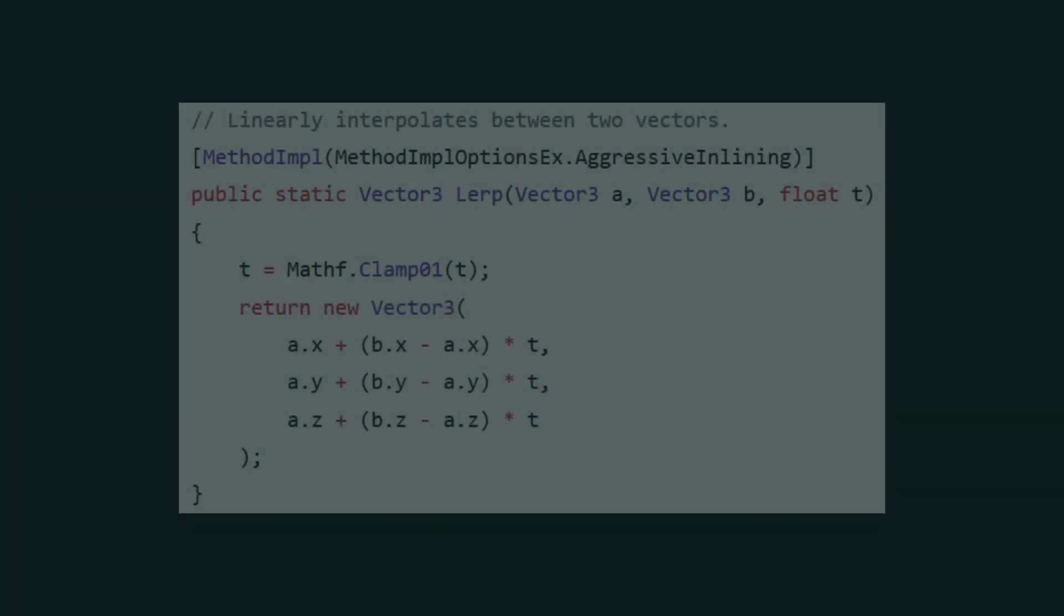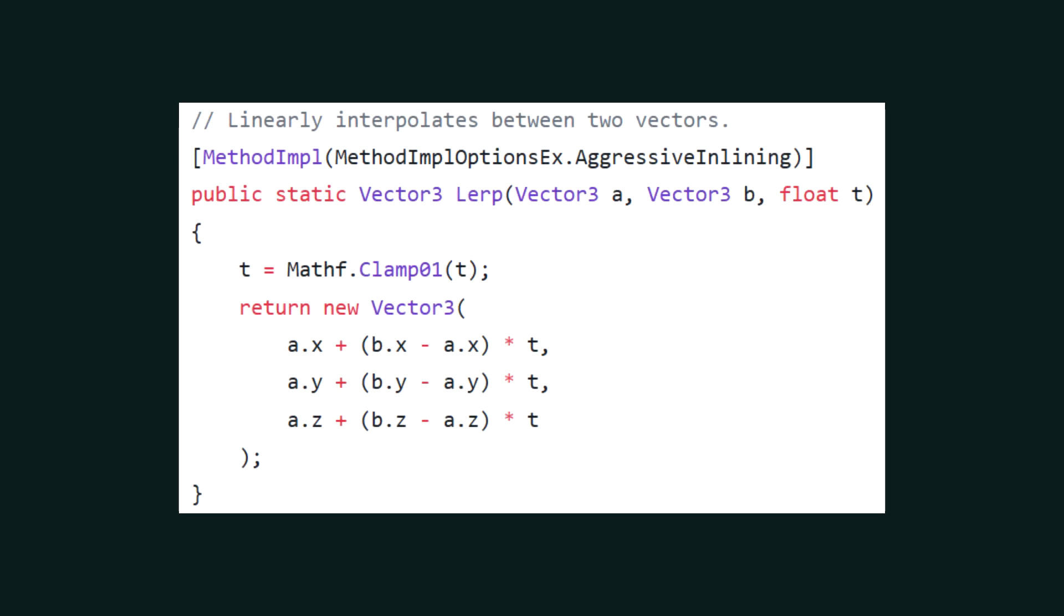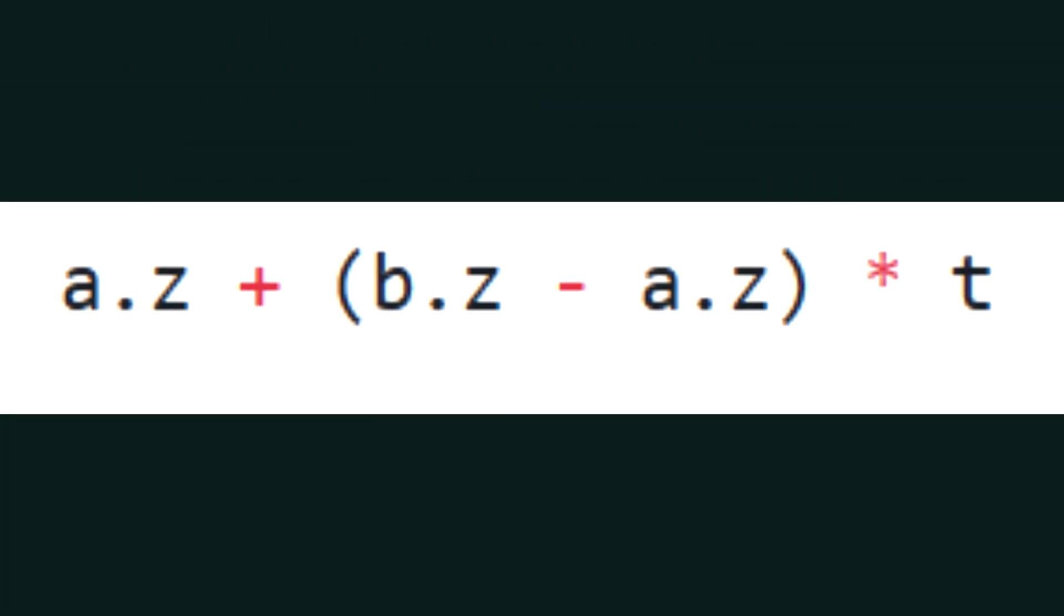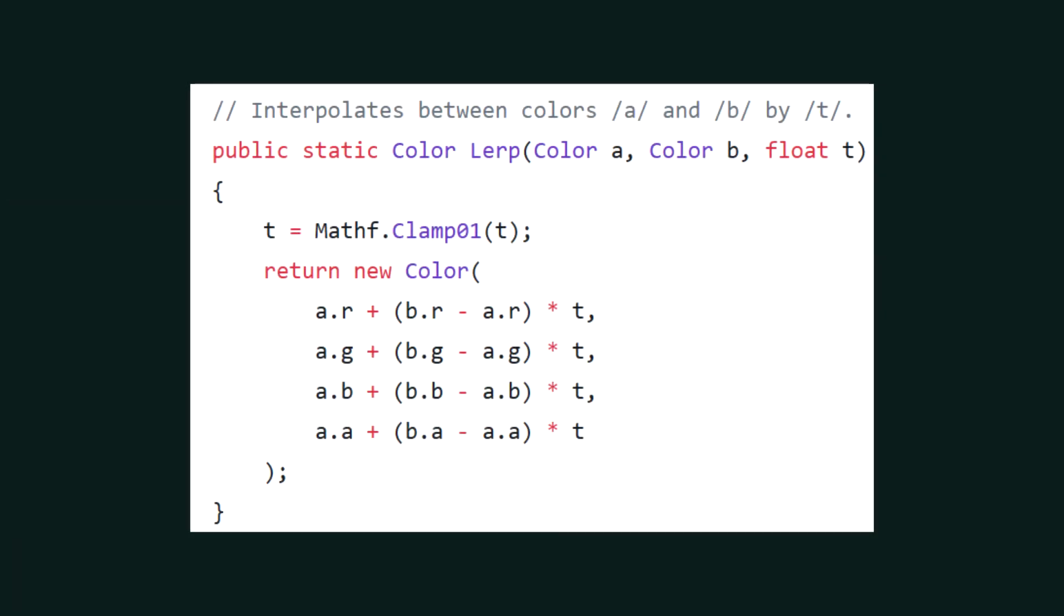For a Vector3, we just add an additional expression for the z dimension, in which we lerp between a and b's z values. And of course the color lerp is implemented exactly the same, though instead of the xyzw convention, it uses rgb and a instead.